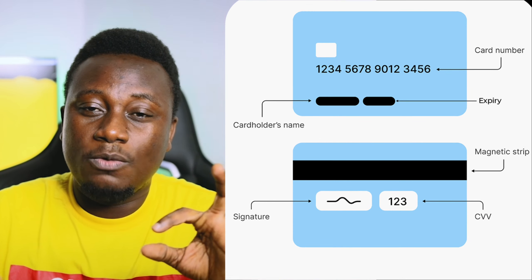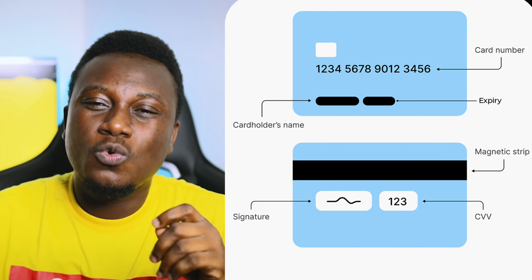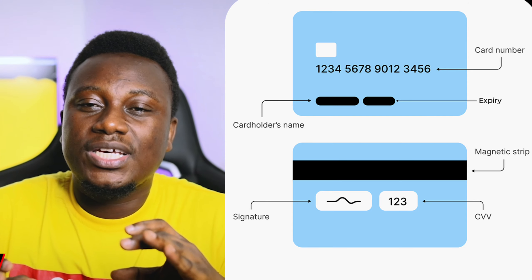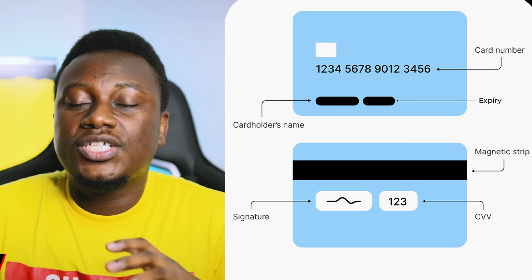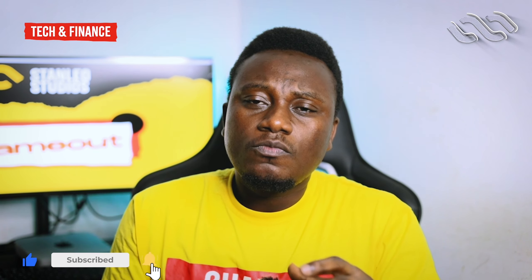On the physical card given to you by the bank, you'll notice there is a card number, and at the back of the card there is a security code, which allows you to purchase things online.